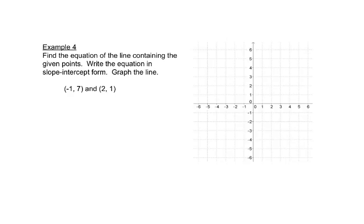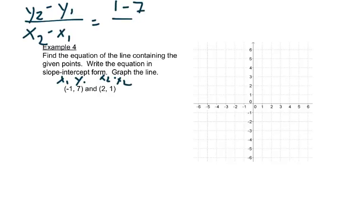One more example. This is with two points. We aren't given a slope here, so we have to find the slope. Remember our slope formula is y₂ minus y₁ over x₂ minus x₁. We'll call this x₁, y₁, x₂, y₂, which gives us 1 minus 7 over 2 minus negative 1. So we have negative 6, this is really plus, over 3, which is negative 2. So my m is negative 2.